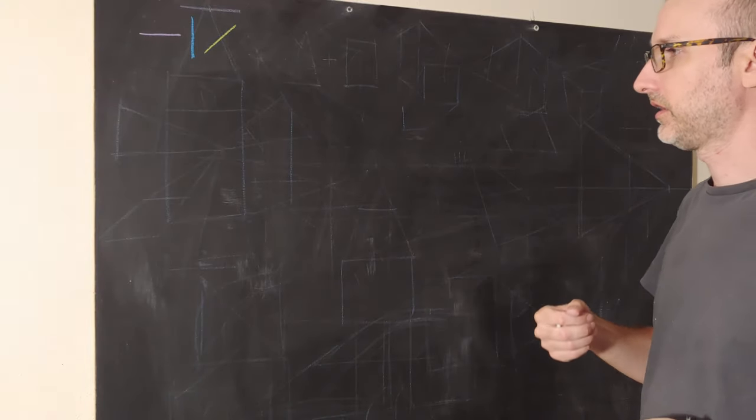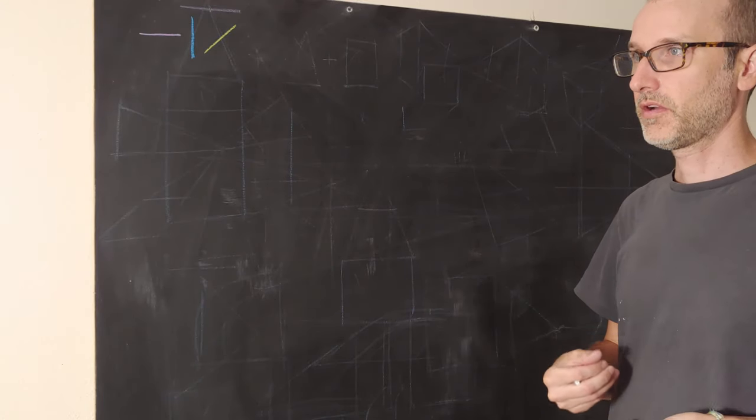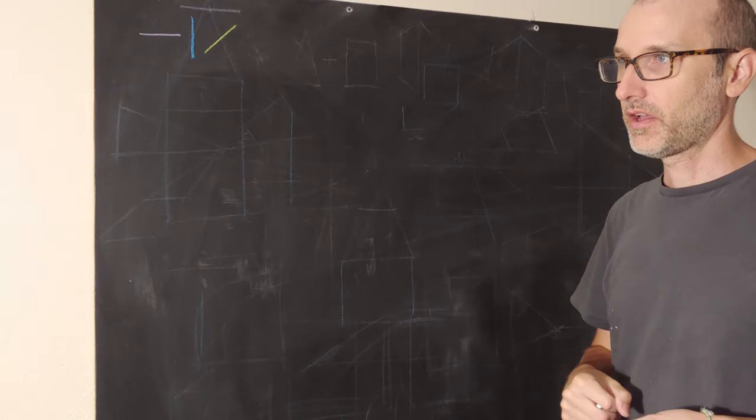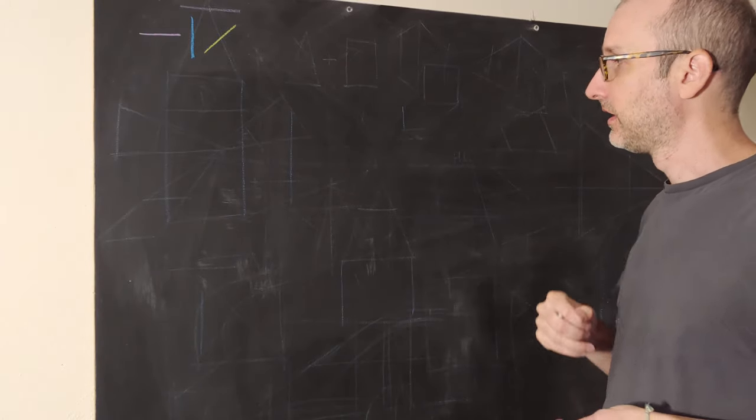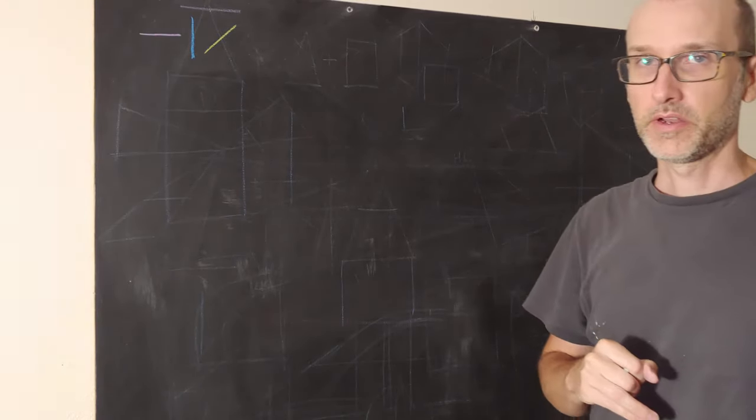My drawing teacher used to say that stand wherever you are, rip out your eyeballs, throw them in a direct line, and wherever they splatter on the wall is where your vanishing point and horizon line are.